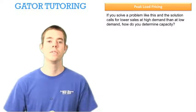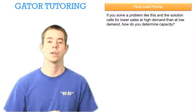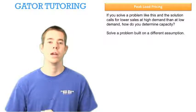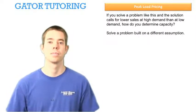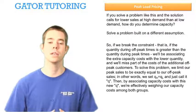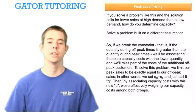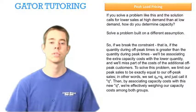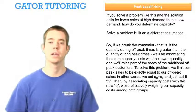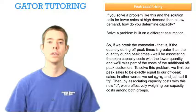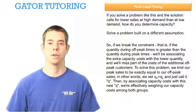The next question says, if you solve a problem like this and the solution calls for lower sales at high demand than at low demand, how do you determine capacity? So if we found our constraint to be broken, what do we do? And the answer is solve a problem built on a different assumption. So if we break the constraint, that is if quantity during off peak times is greater than the quantity during peak times, we'll be associating the extra capacity cost with the lower quantity, and we'll miss part of the cost of the additional off peak customers. We'll build our building the wrong size because we won't be taking into account all the customers.